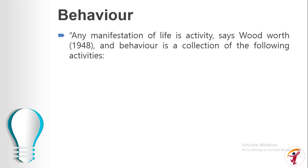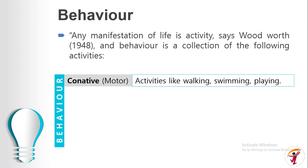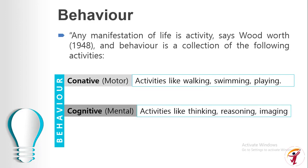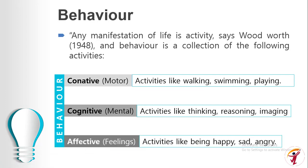Woodward says: 'Any manifestation of life is activity,' and behavior is a collection of activities. Activities and behavior are of three types: first, conative activities related to motor skills like walking, swimming, and playing; second, cognitive activities related to mental things like thinking, reasoning, and imagining; and lastly, affective activities — emotional activities and feelings like being happy, sad, or angry. The sum total of these three activities is behavior.